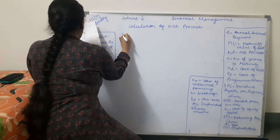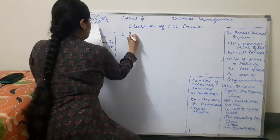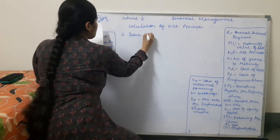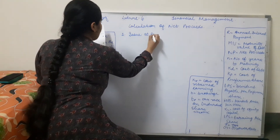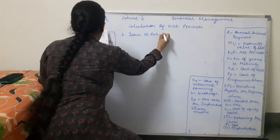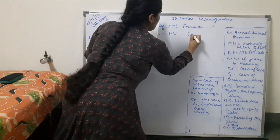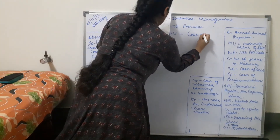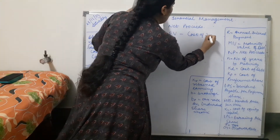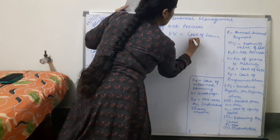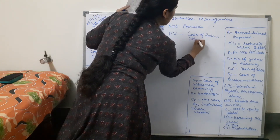Number 1: When issued at par, net proceeds is fixed value minus cost of issue, that is flotation cost.